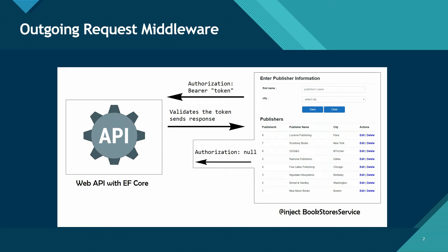But what if the token is empty? We do not want to bother our API unnecessarily. That's why we'll create a middleware on the client side to check if the Authorization header is null. This validation should happen on the client side — that's what's called an outgoing request middleware.